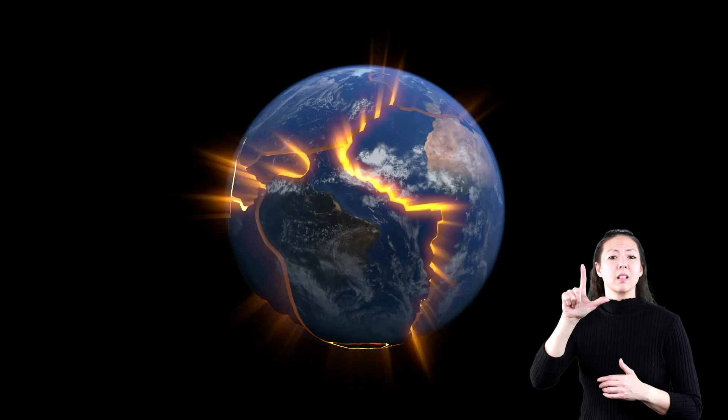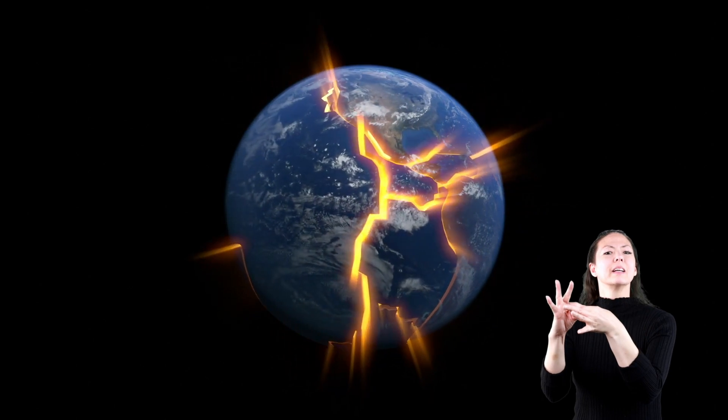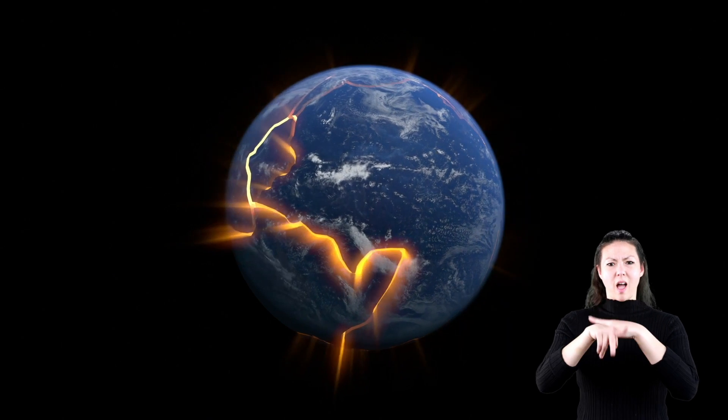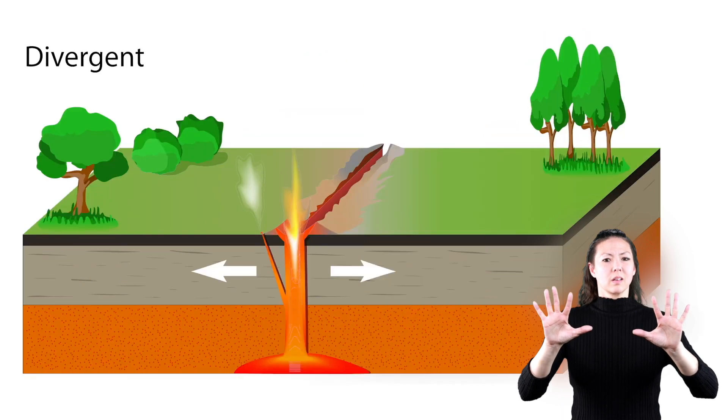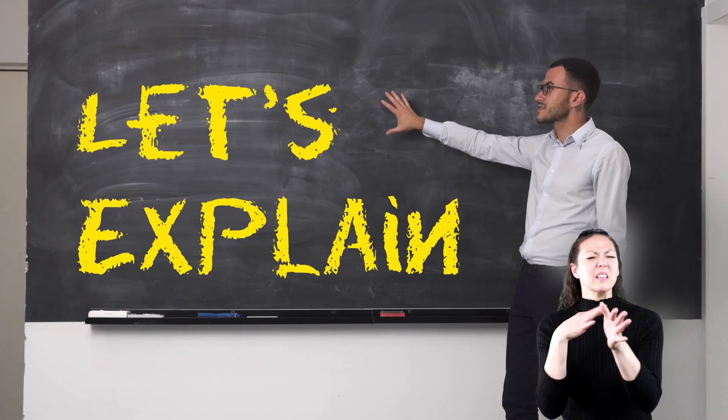Tectonic plates move mostly at the places where they meet, at the boundary of two plates. And there are different kinds of boundaries: convergent, divergent, and transform. Let's explain.